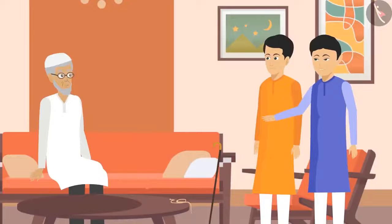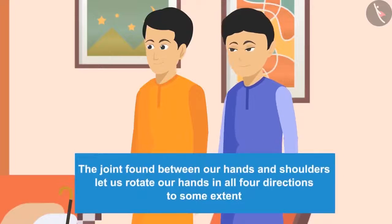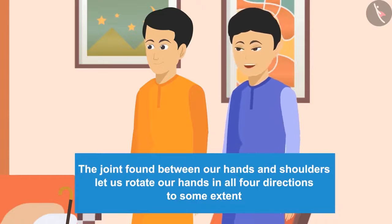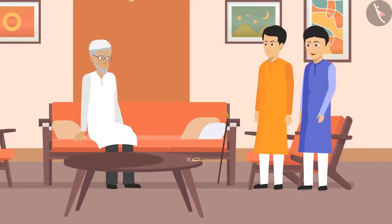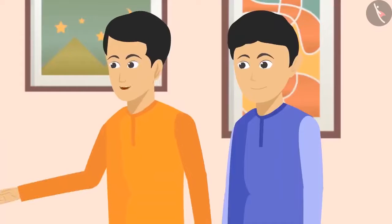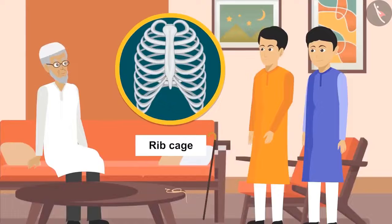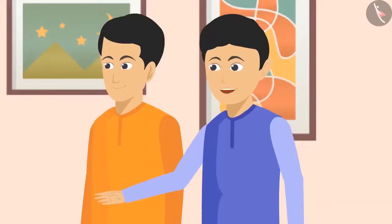The ball and socket joint, found between the hands and shoulders, allows movement up and down, left and right, and rotation in all four directions. The leg joints also allow movement left, right, backward, and forward, though they are not as flexible as the shoulder. The students also noted that not every joint is for movement — some joints like those in the rib cage and upper jaw exist only for strength.